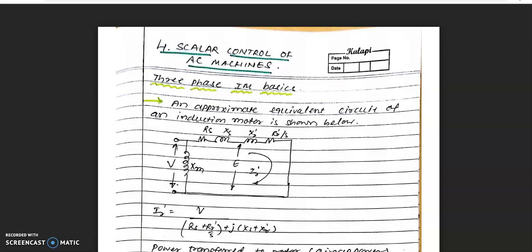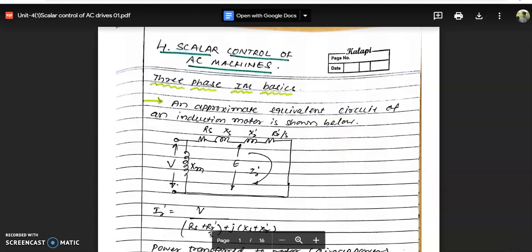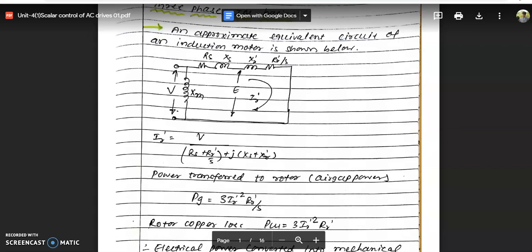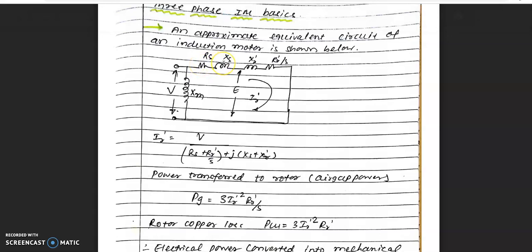We'll start with the equivalent circuit of three-phase induction motor. What you can see is the approximate equivalent circuit with stator resistance, stator leakage reactance, rotor circuit leakage reactance, and the effective resistance of the rotor circuit.